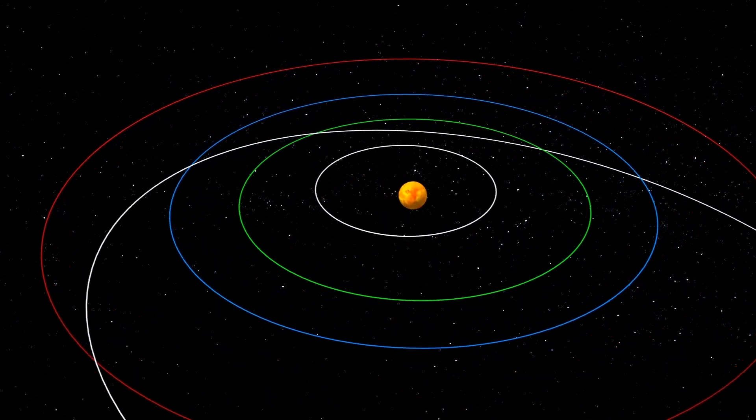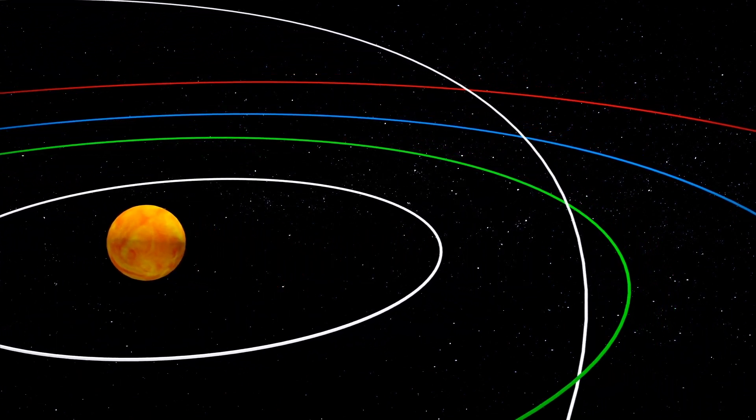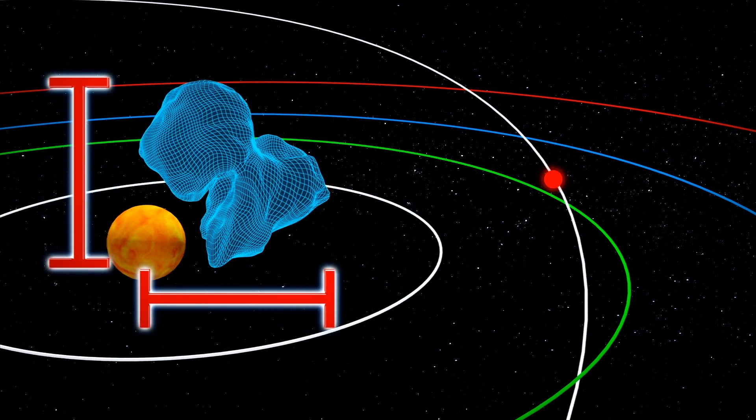NASA warned that asteroid 2002 PZ-39 will approach Earth on Saturday. This asteroid is moving at a speed of nearly 55,000 kilometers per hour relative to Earth and has a diameter of between 440 meters to 990 meters.